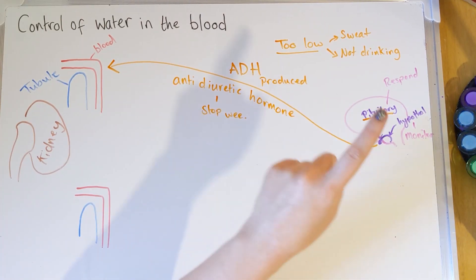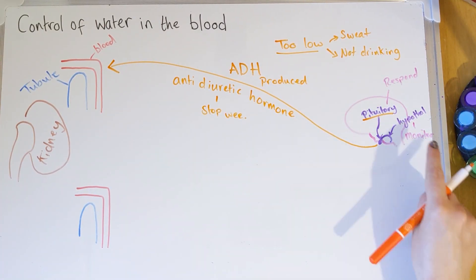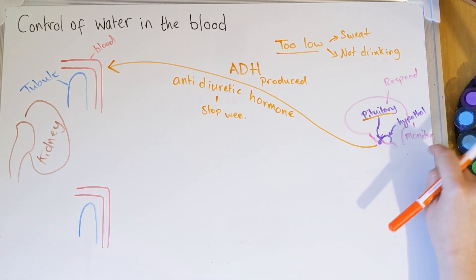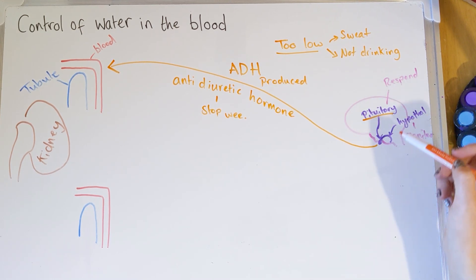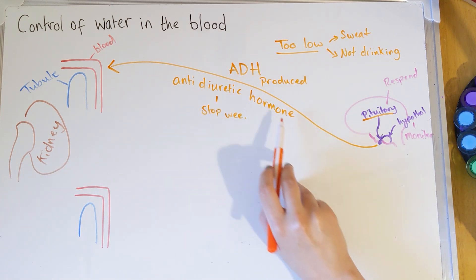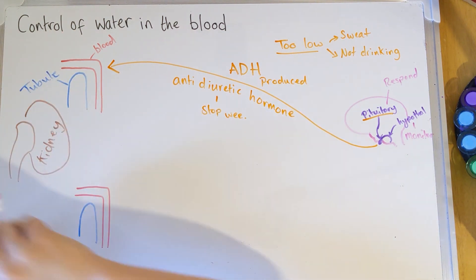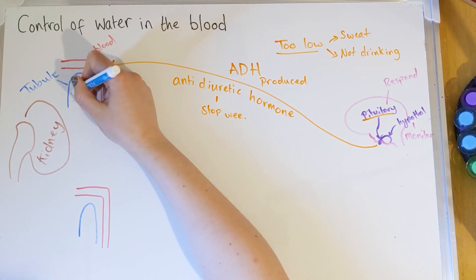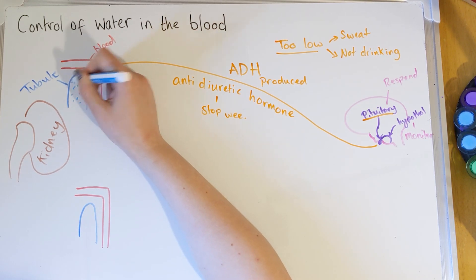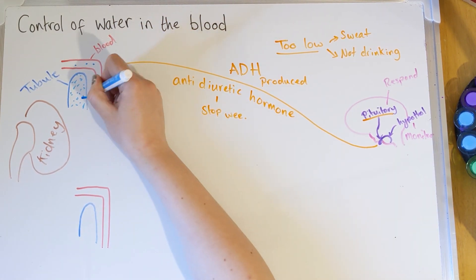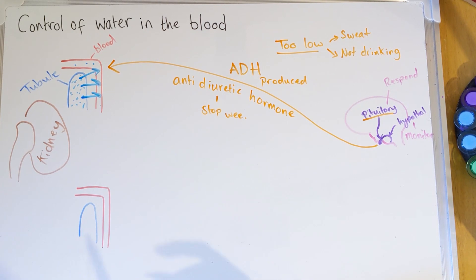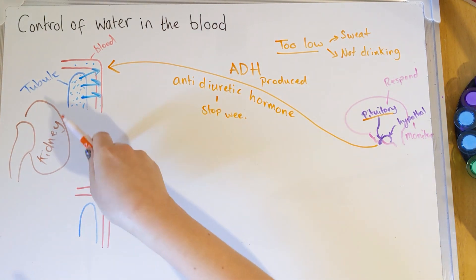A good way to remember ADH: 'diuretic' has the word 'urine' in it, so anti-diuretic hormone means anti-weeing hormone. You don't want to wee because you want to retain water as it's too low in your blood. The hypothalamus detects that water in the blood is too low, so the pituitary gland releases ADH, which targets the kidney. Because the blood is low in water, there are far more water molecules inside the kidney tubules compared to the blood, so via osmosis a large volume of water moves from the tubule into the blood.